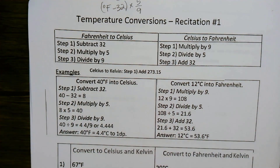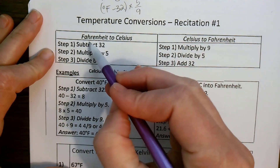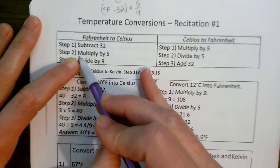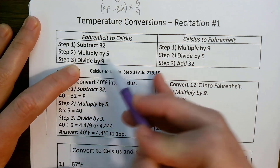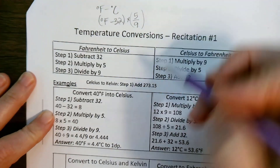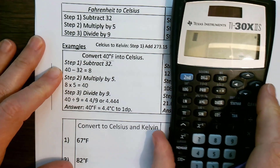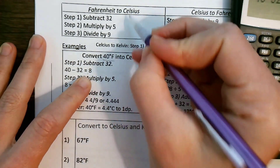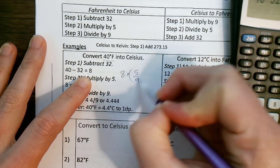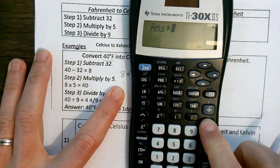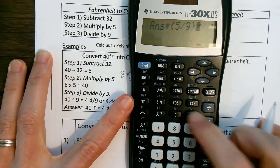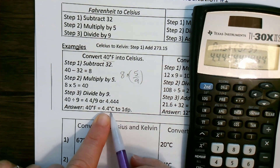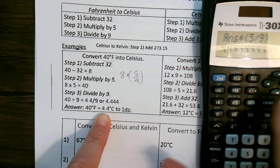This last page covers temperature conversions — I recommend watching the lecture video on this. To go from Fahrenheit to Celsius: step one, subtract 32 from the Fahrenheit temperature, then multiply that answer by 5 and divide by 9 — or multiply by 5/9. Let's take 40 degrees Fahrenheit: 40 minus 32 equals 8. Then 8 times 5/9 gives 4.4 degrees Celsius, to one decimal point.